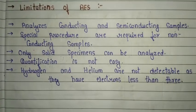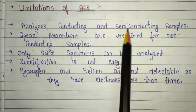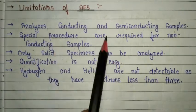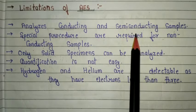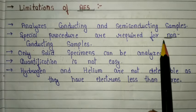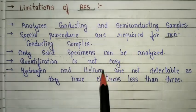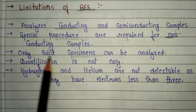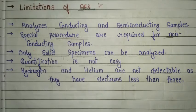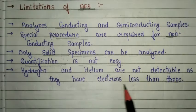Limitations of Auger electron spectroscopy: it analyzes conducting and semiconducting samples; special procedures are required for non-conducting samples. Only solid specimens can be analyzed. Quantification is not easy, which is one of the important limitations of this process.